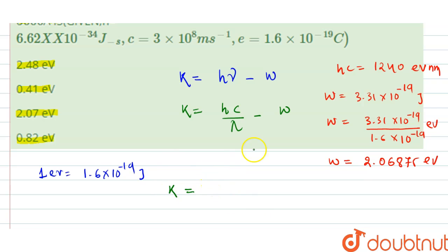Nanometer means 10^-9 meters, divided by wavelength. The wavelength is given as 5000 angstroms, which is 5000 × 10^-10 meters, minus the work function of 2.06875 eV.